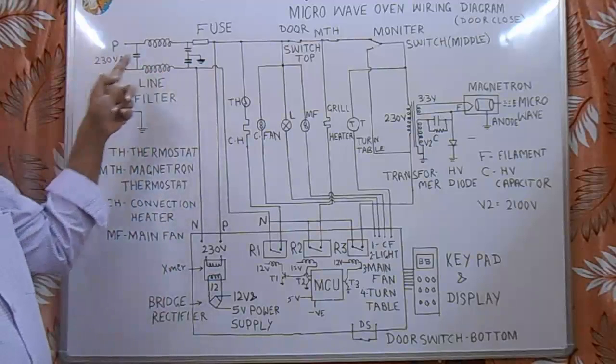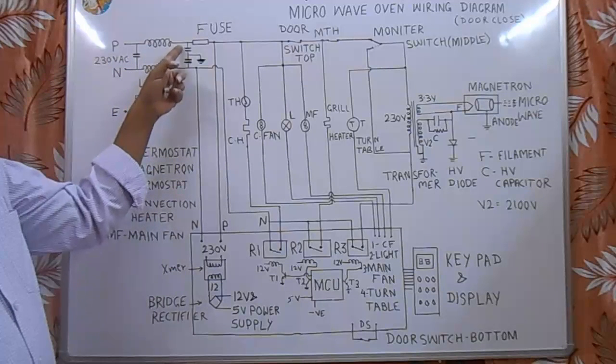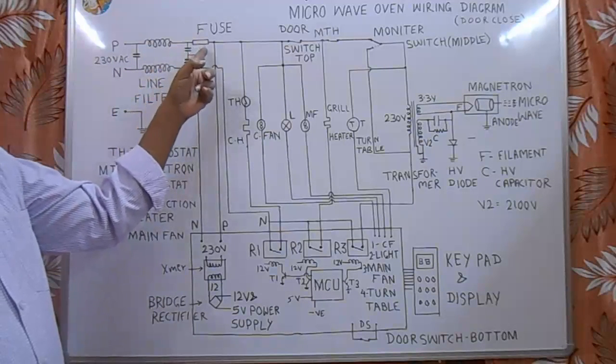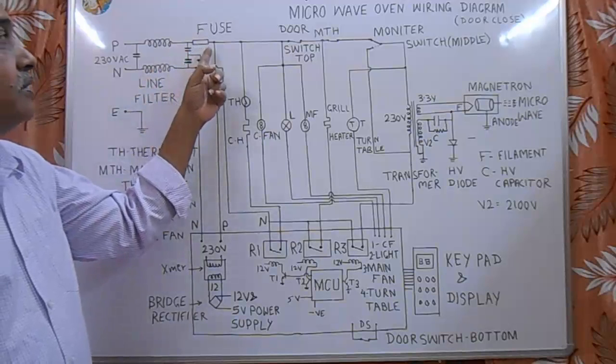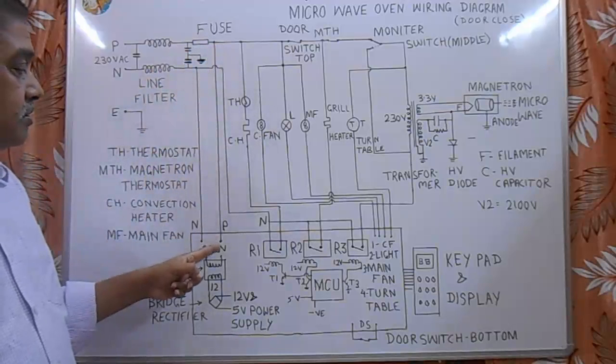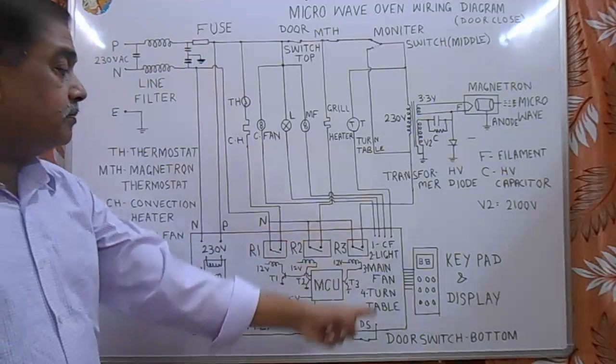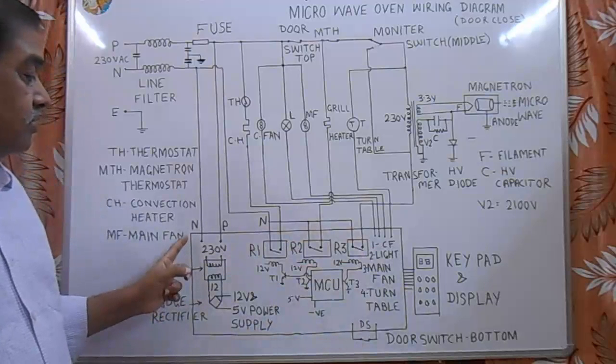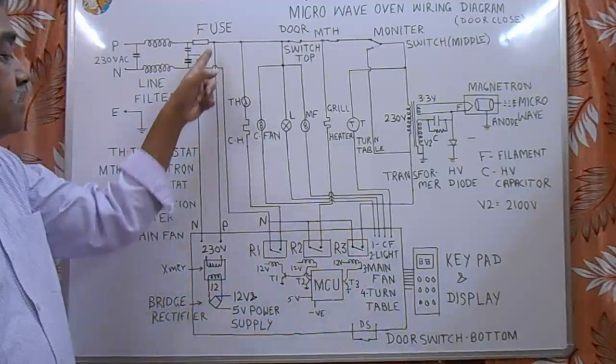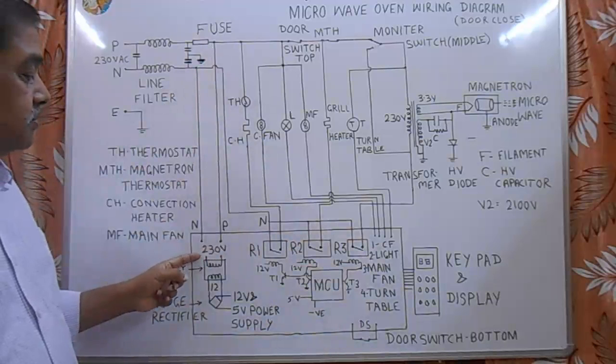Then line fuse. From here the supply goes to the main control PCB. This is control PCB. Phase and neutral supply goes to this PCB.